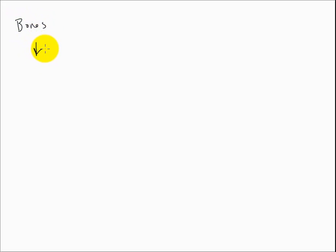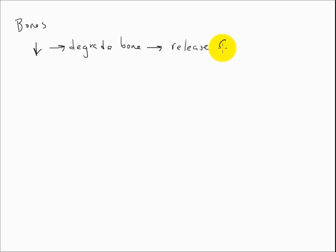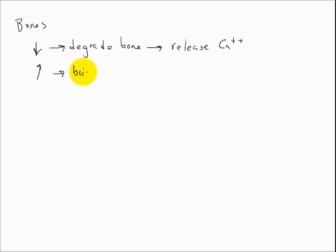Let's look at the bones first, since they store most of our calcium. If we degrade bone, we release calcium — so if we have a low calcium level, we want to start breaking down bone, which will release calcium back into the blood. Conversely, if we have too much calcium, we can build bone, forcing calcium out of the blood and using it to build bone structure.